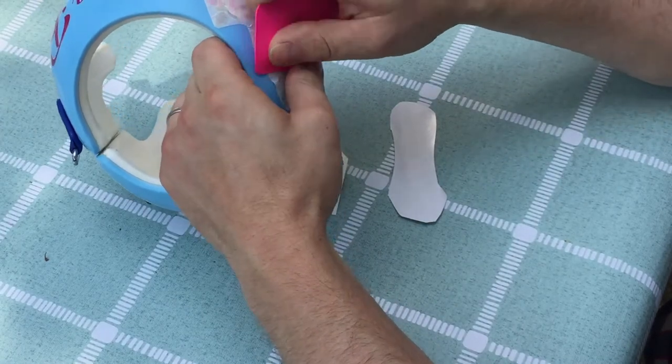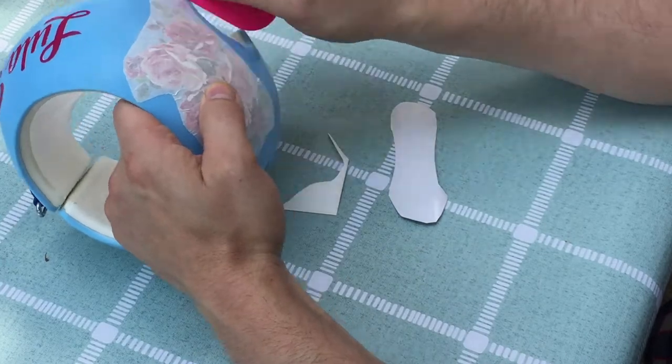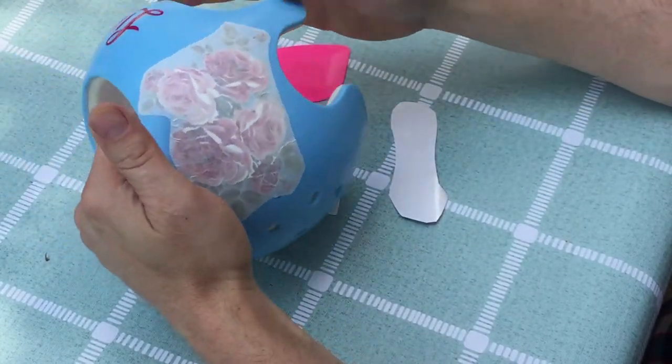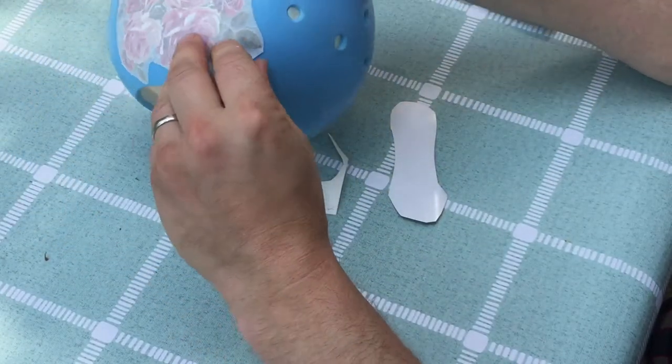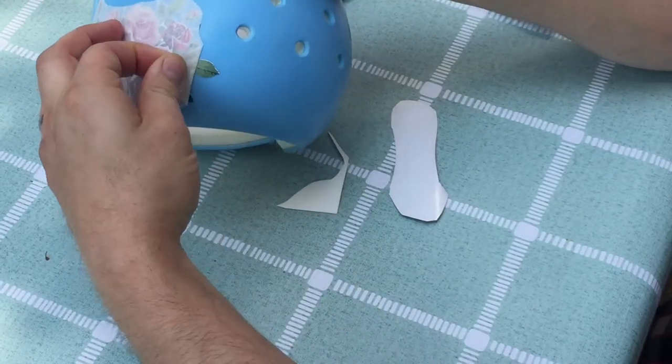But if I do see something after I remove the transfer tape, I can just stick some transfer tape down over the trouble area and I can press full force again. I didn't have to do that here, but I've had to do that in the past.